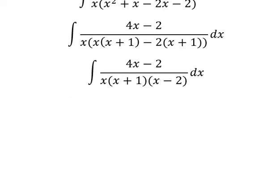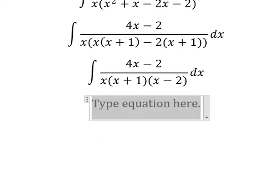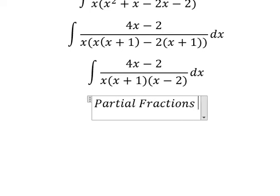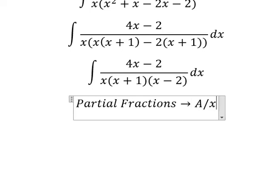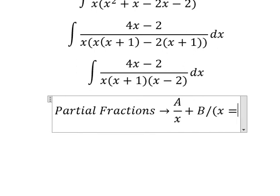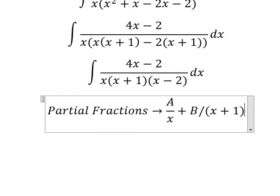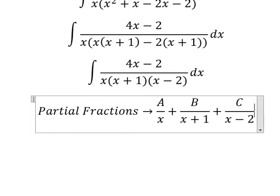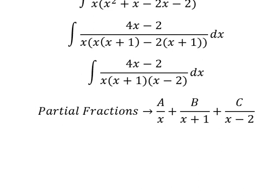Next we need to use partial fractions. So I will put capital A over s, capital B over s plus one, capital C over s minus two. After that we find the common denominator.